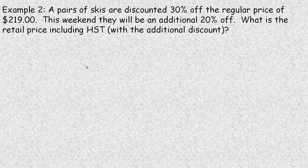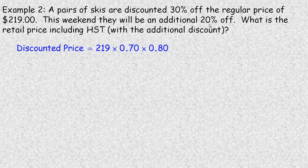Example number two: A pair of skis are discounted 30% off the regular price of $219. This weekend they will be an additional 20% off. You're asked what is the retail price including HST with the additional discounts? We're going to take 30% off and then 20% off as well.